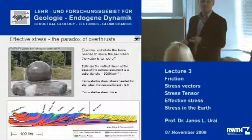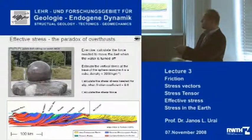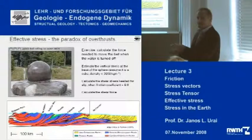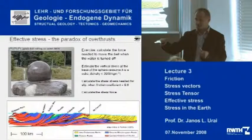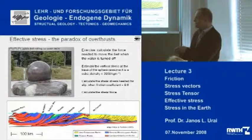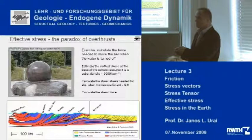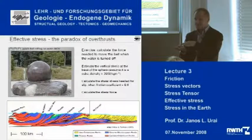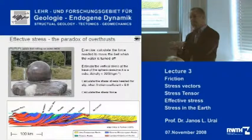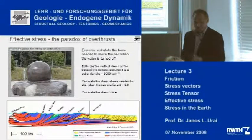This is one of the explanations proposed for large horizontal overthrusts in geology — why there are very large horizontal overthrusts that can move. One explanation is that there is very high-pressure fluid in these thrusts, which takes away the shear stress because it reduces the effective normal stress on the thrust plane.